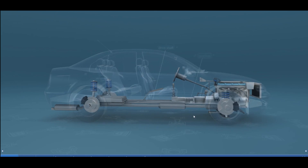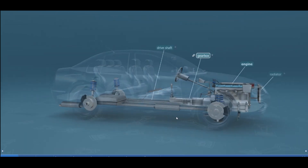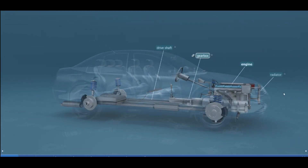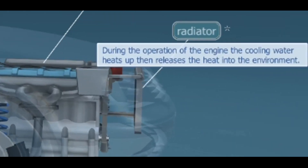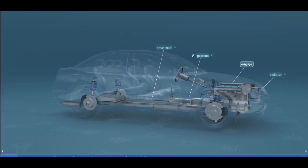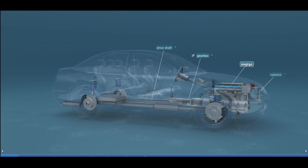Starting from the front, we're going to start with the radiator. During the operation of the engine, the cooling water heats up and then releases the heat into the environment — this cools down our engine as it is running. The engine is the main power-producing component of the car. The most common engine type is the four-stroke auto engine, and the rotating motion of the engine's crankshaft is transmitted to the wheels by the drive shaft.